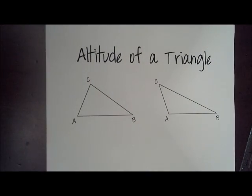I'm going to be constructing it from point C to side AB in both of these triangles. I have one acute triangle and one obtuse, just to show you some of the difficulties we can encounter.